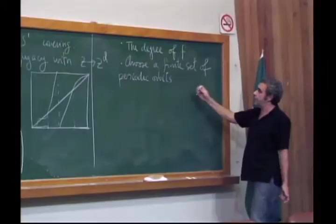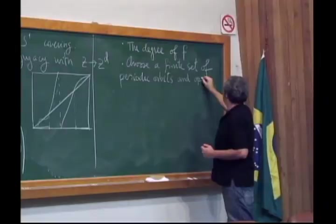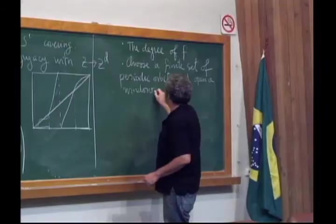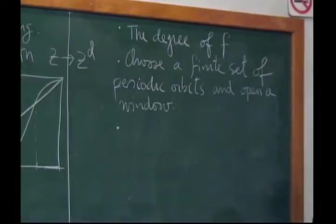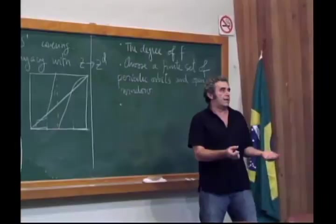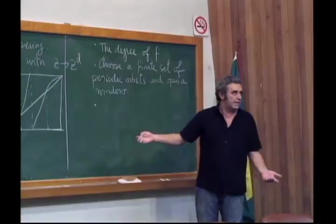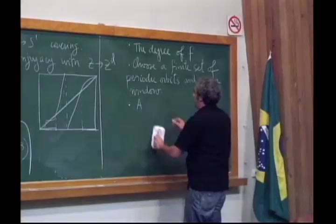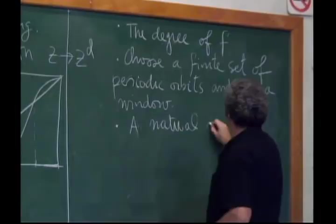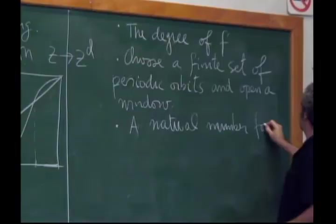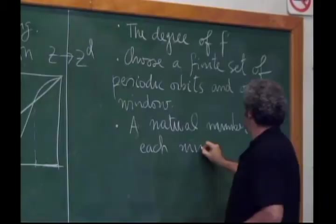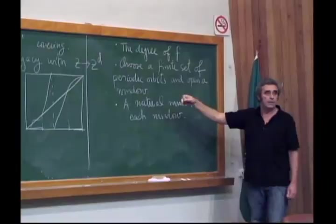You choose a finite set of periodic orbits and open a window in each of them. In each window you can put any diffeomorphism you like — a diffeomorphism of the interval is a map that can have a finite number of fixed points or periodic points that are attracting. So a finite natural number for each window is sufficient data to classify the conjugacy class of a stable map.